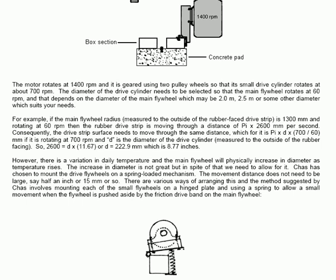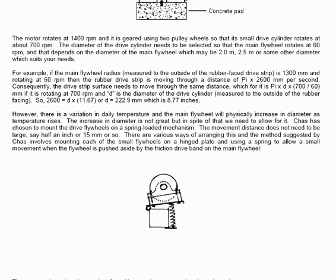However, there is a variation in daily temperature and the main flywheel will physically increase in diameter as the temperature rises. The increase in diameter is not great but in spite of that we need to allow for it. Chas has chosen to mount the drive flywheel on a spring-loaded mechanism. The movement distance does not need to be large, say half an inch or 15 millimeters or so. There are various ways of arranging this and the method suggested by Chas involves mounting each of the small flywheels on a hinged plate and using a spring to allow a small movement when the flywheel is pushed aside by the friction band on the main flywheel.